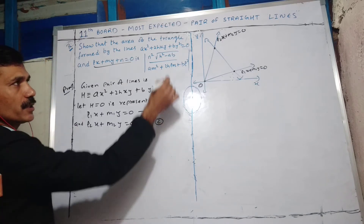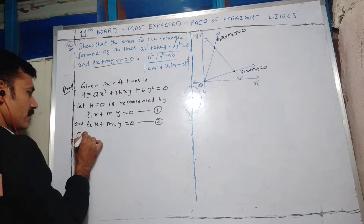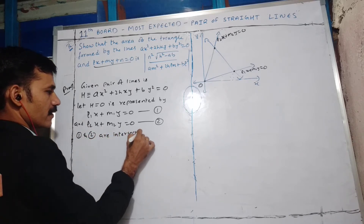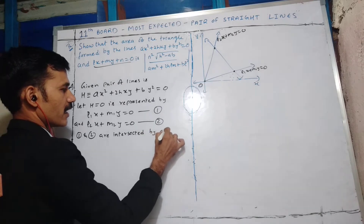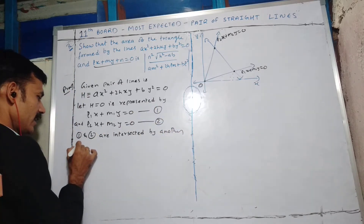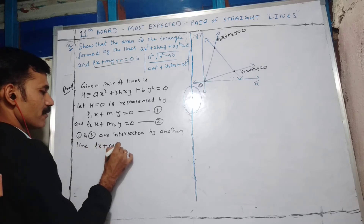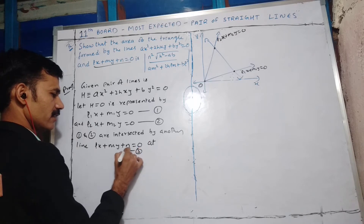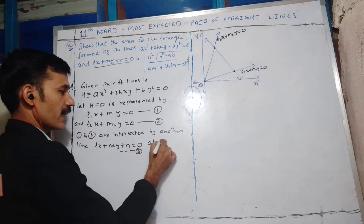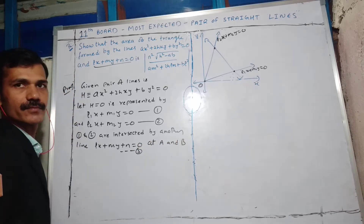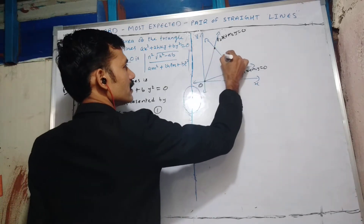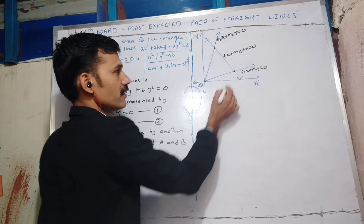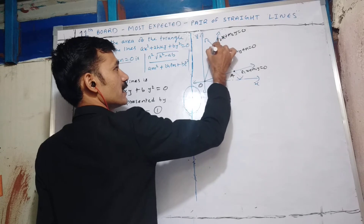Equations 1 and 2 are intersected by another line Lx + My + N = 0, which we represent as equation 3, at points A and B. This line Lx + My + N = 0 intersects the pair of straight lines at A and B.